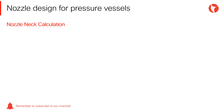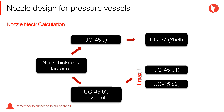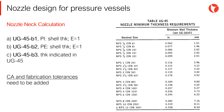It is necessary to define the following conditions in order to obtain the nozzle neck thickness: internal pressure, external pressure, corrosion allowance if applicable, piping arrangement, and all nozzle loads. Once this information is gathered, the procedure indicated in paragraph UG-45 and shown in the picture must be followed. Even when the procedure may seem intricate, it is very simple and straightforward — it is about establishing minimum requirements for different design conditions.